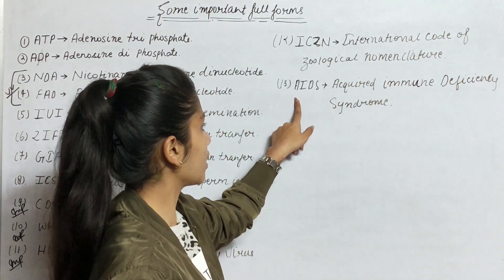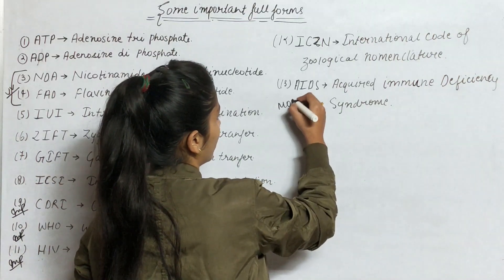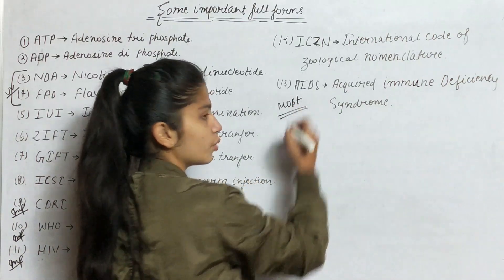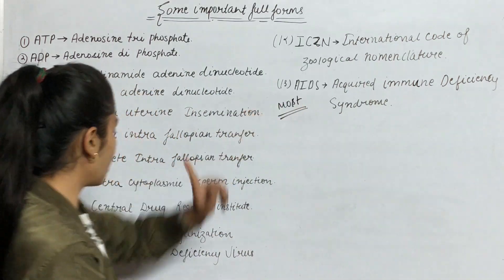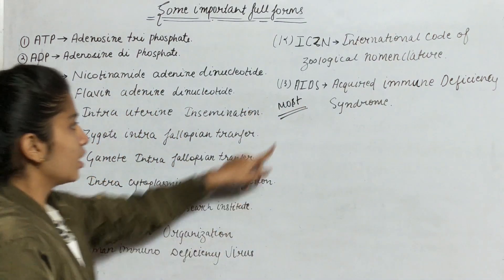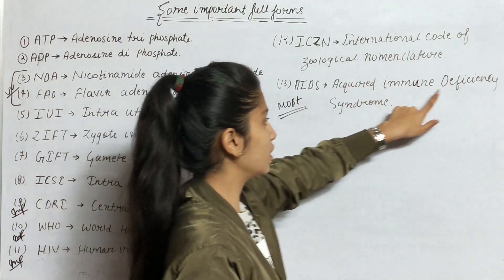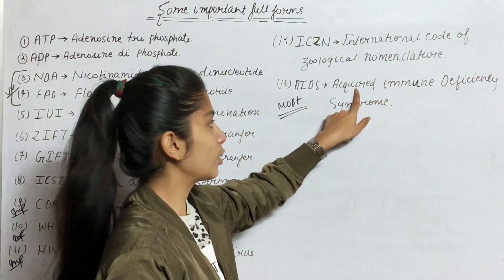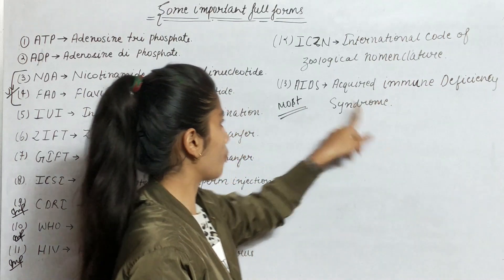Next is AIDS — most important. This is a long question topic along with HIV. AIDS full form is Acquired Immune Deficiency Syndrome.